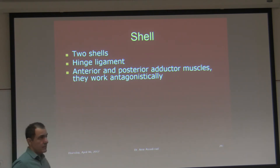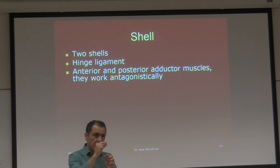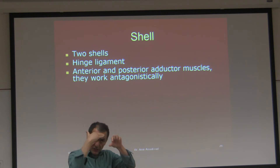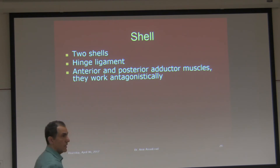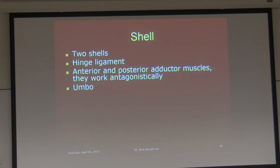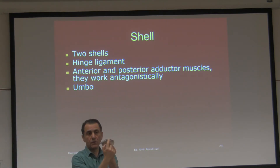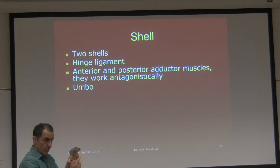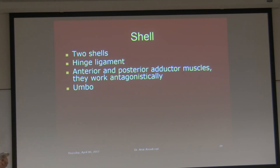In old days when we used to get clams for dissection, they would put a little bit of wood between the two shells before killing them so it would be easier to open. The umbo is the oldest portion of the shell — right here. We have some old shells and all three layers of the shell are visible. That would be the umbo — the oldest portion, analogous to the apex in gastropods.